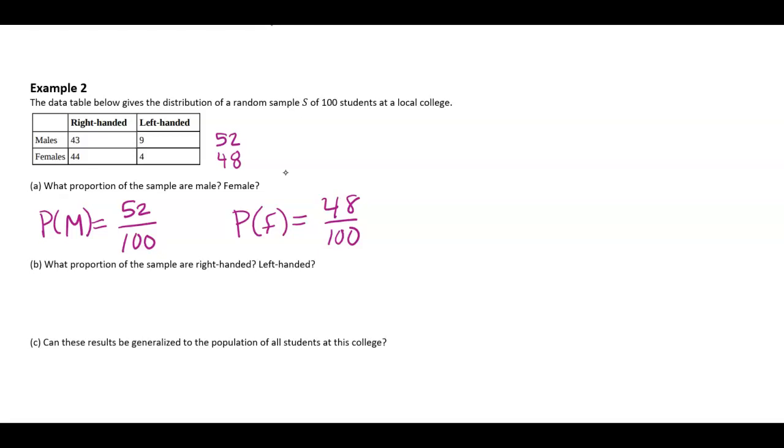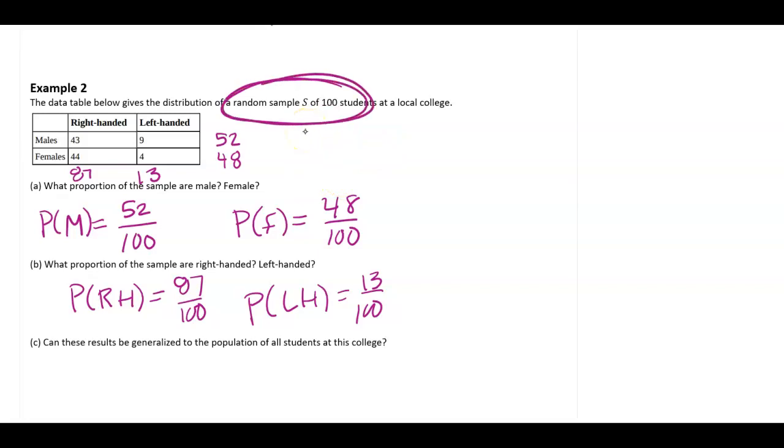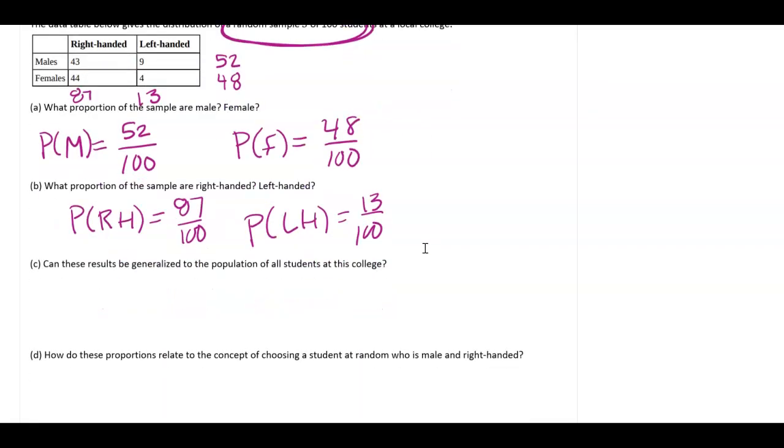All right. Now, if I wanted to do right-handed, well, it looks like there's 87 out of the 100. And left-handed would then be 13 out of the 100. And because this is a random sample, I can assume that this sample models our population of all students pretty well. It's really hard to take a census or know the entire population of anything.